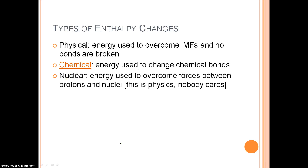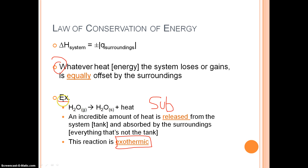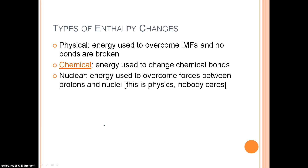There are three different types of enthalpy changes: physical, chemical, and nuclear. In this course we're only worried about the first two. Physical changes — like the previous water example — involve intermolecular forces being broken, not chemical bonds. In the case of water, we have hydrogen bonds and London dispersion forces, as well as dipole-dipole interactions, that need to be overcome. The actual bonds themselves remain intact; we're just overcoming forces.